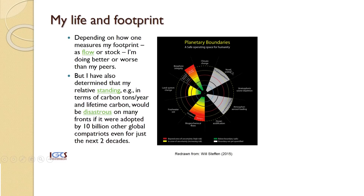This image shows the safe operating space for humanity in terms of planetary boundaries. One of the things to bear in mind is that this is related to human footprints, and so every individual needs to look at his or her own contribution to these planetary limits. On an individual basis, the amount of CO2 one expends, or the consumption of resources that leads to biogeochemical limits, may vary.